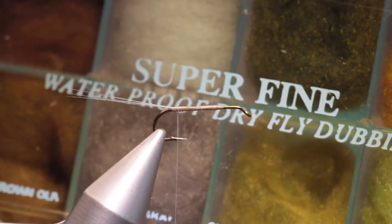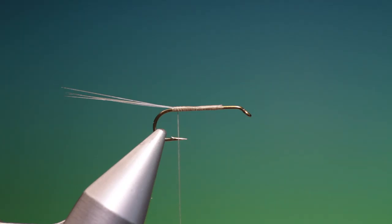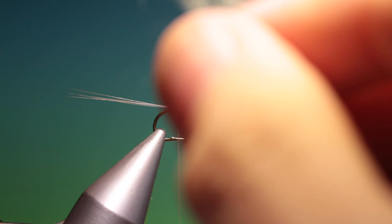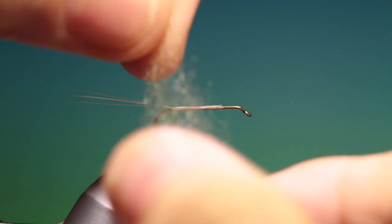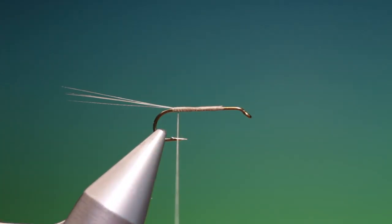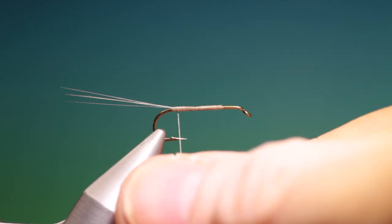I've got some super fine dubbing, I'm going to be using the Pale Evening Dun. Now what you want to do is taper the dubbing before you start applying it, so it's finer at the top and gets thicker at the bottom. This is going to have a taper as we wrap it.